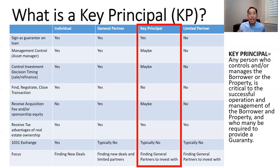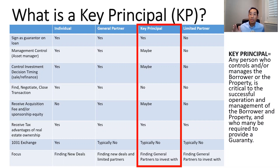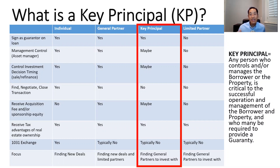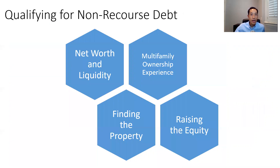The general partner is going to be considered a key principal, but there's also a one-step-below role where a key principal could be signing on the loan without having all the control that a general partner has. That's what we're going to talk about — really that middle slot of key principal in today's video.